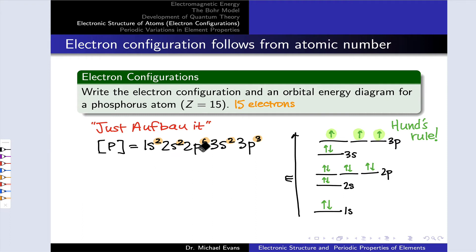1s2, 2s2, 2p6, 3s2, 3p3. And what we've built out on the right hand side here is an orbital energy diagram showing the occupancy and rough relative energies of the orbitals in their various subshells.